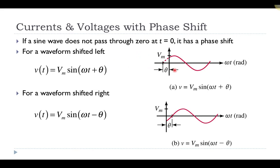If the waveform is shifted to the left — meaning I'd have to backtrack on the time axis to place the sine wave's zero crossing at the origin — then I can write the voltage as the maximum value times sine of ωt plus the shift angle θ. Plugging in t equal to zero gives the maximum times sine of θ, which is some non-zero value, explaining why the voltage is not at zero at t equal to zero.